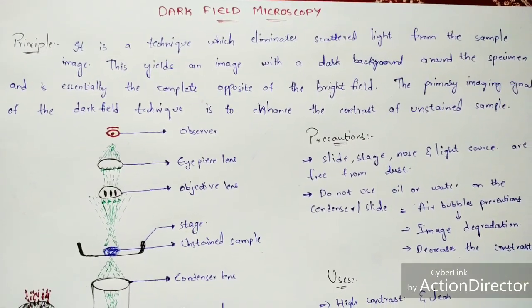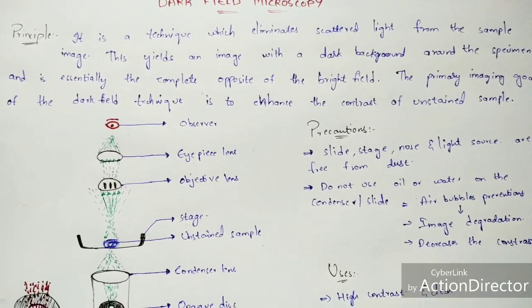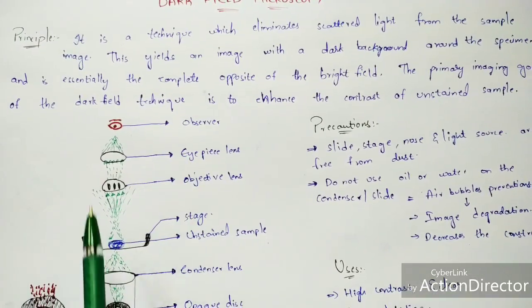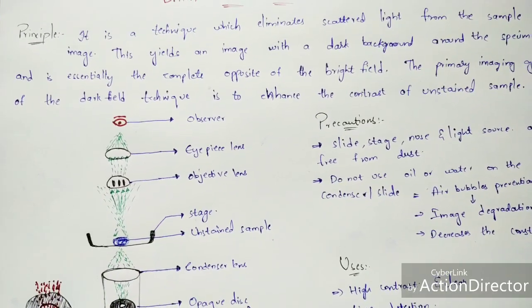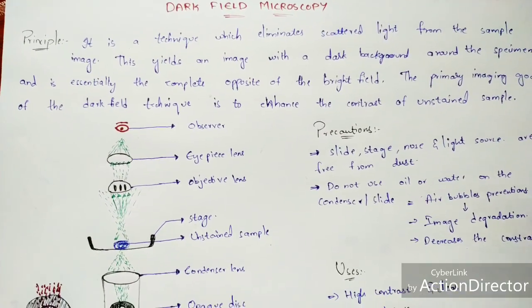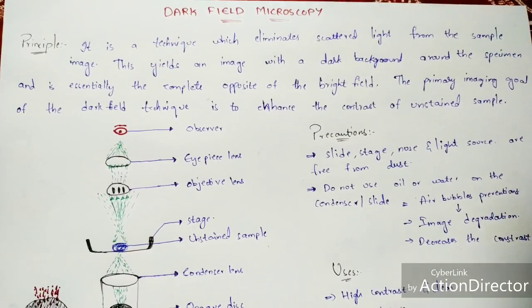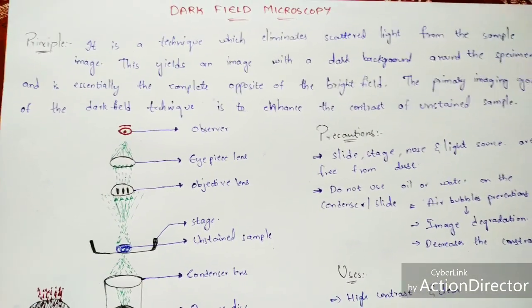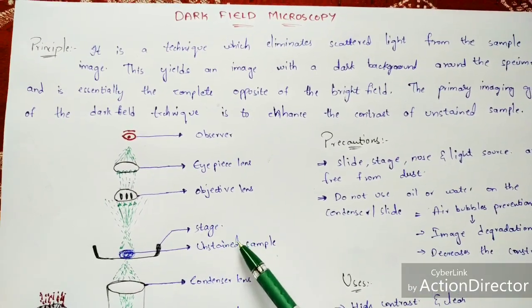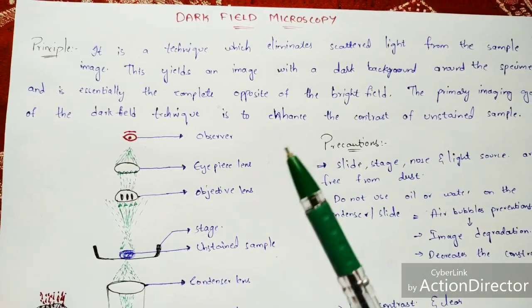The primary aim of the dark field technique is to enhance the contrast of an unstained sample. In dark field microscopy, the part of the sample will appear very bright, but the surrounding region of that sample will be very dark — because of the obstructor, which I will explain shortly.